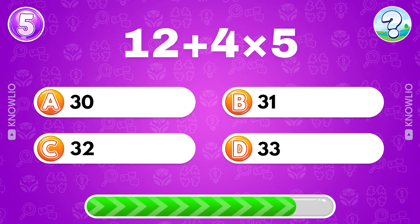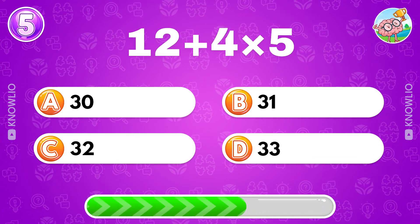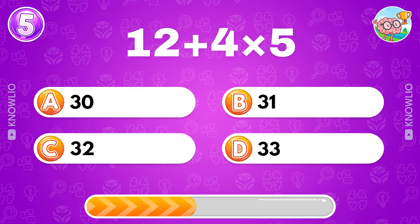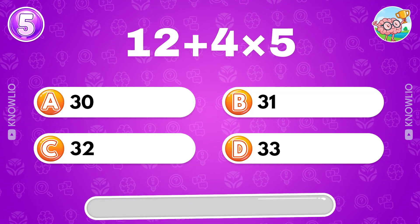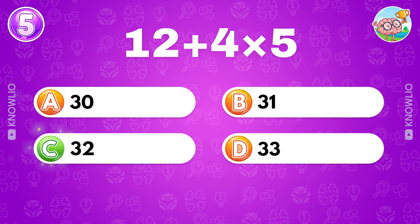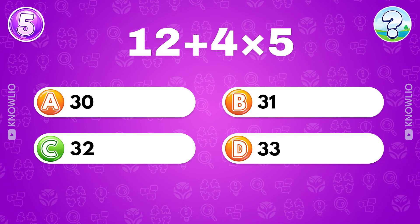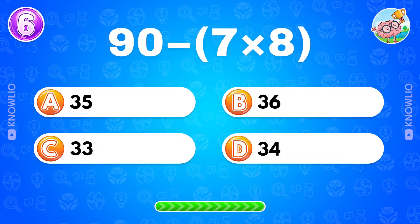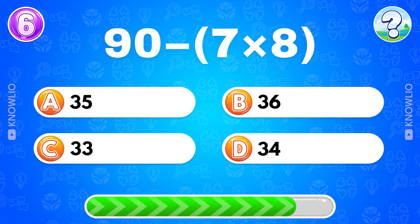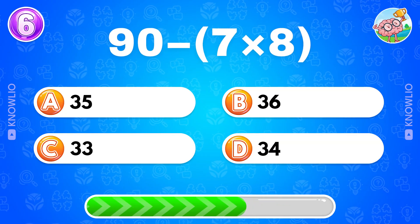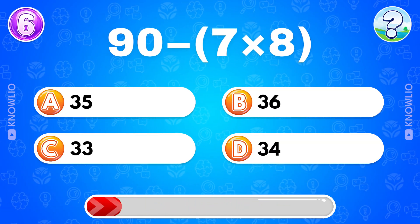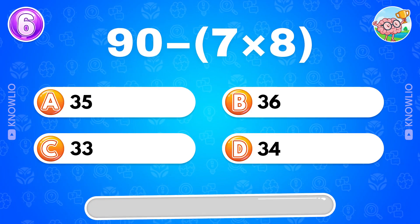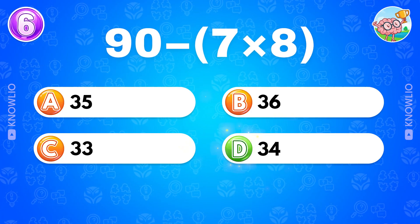Tricky one: 12 plus 4 multiplied by 5? Answer C, 32. Hard one: 90 minus 7 multiplied by 8? Answer D, 34.